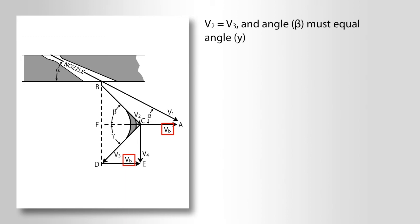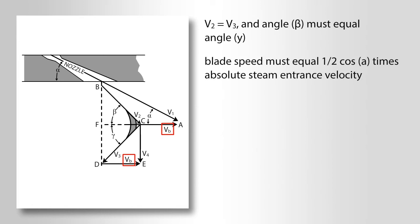If you work through the geometry, you will find that the maximum work results from impulse blading when the steam enters the blade at angle alpha, the blade speed must equal one-half cosine alpha times the absolute steam entrance velocity.